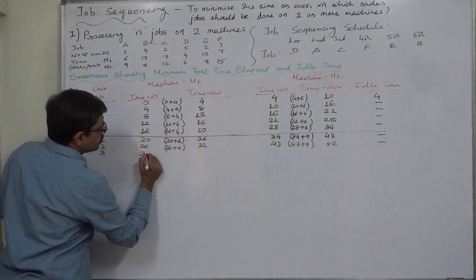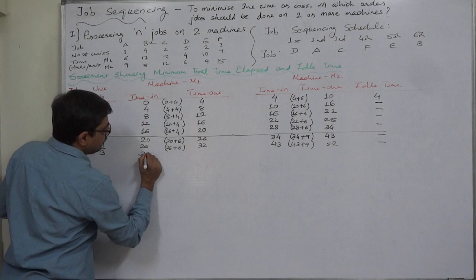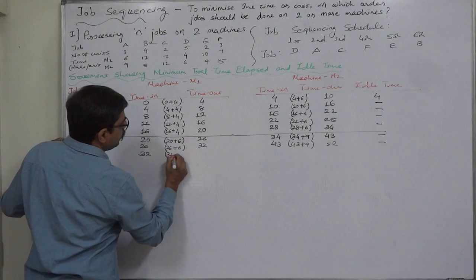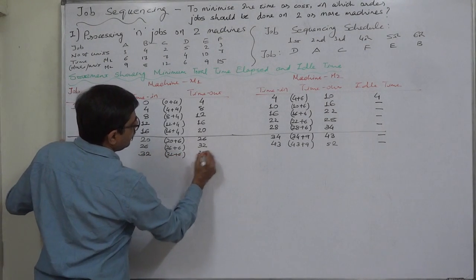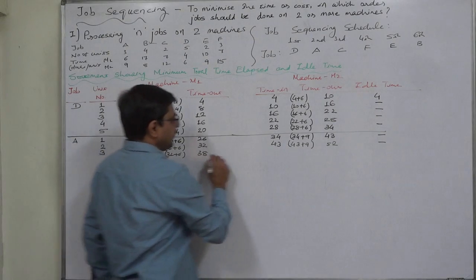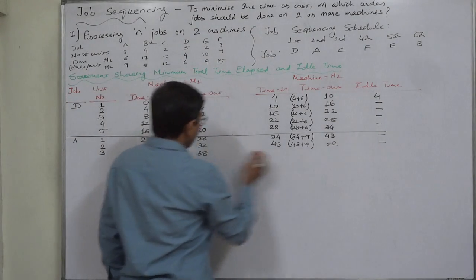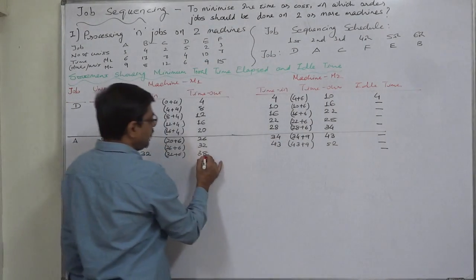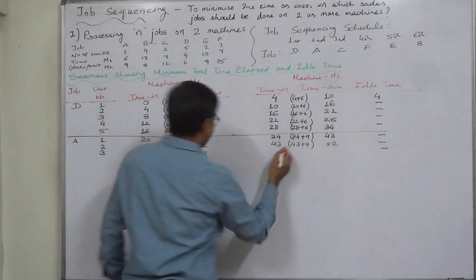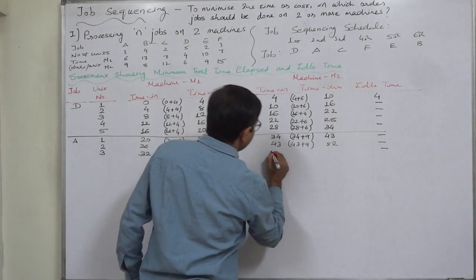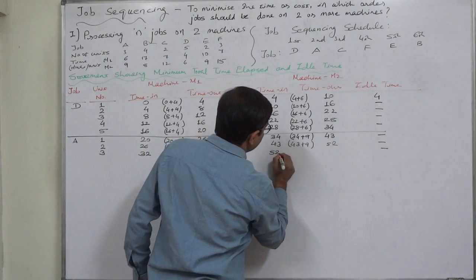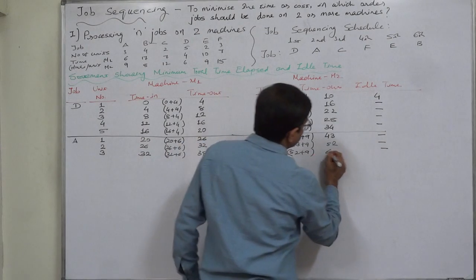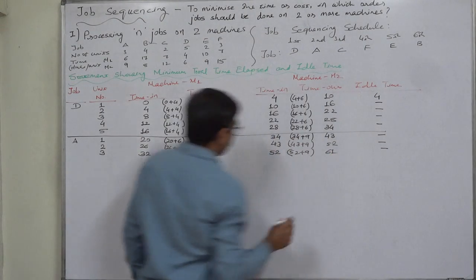The third and final unit of job A on machine 1: time in is 32, 32 plus 6 equals 38. The unit has to wait — no idle time. 38 or 52, whichever is later: 52 becomes time in, 52 plus 9 equals 61 for time out. Job A is over.